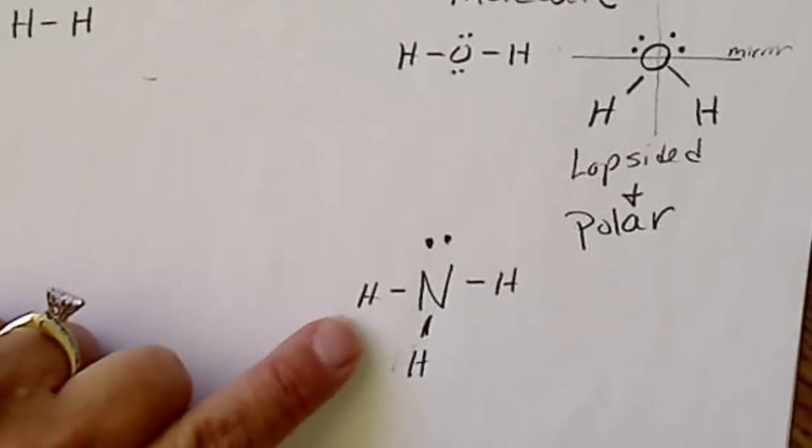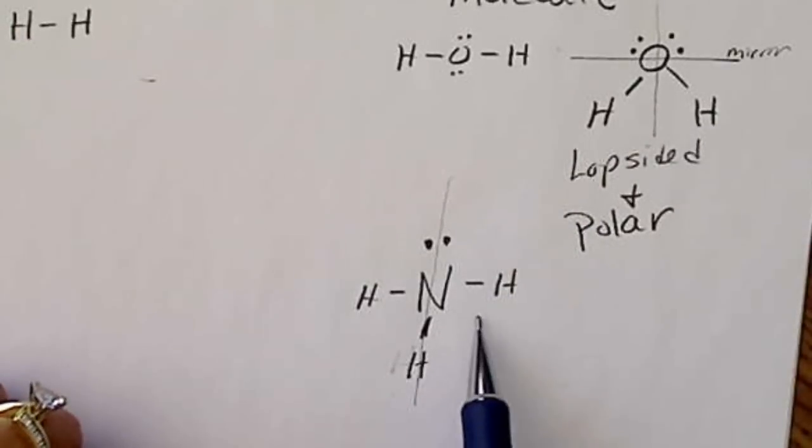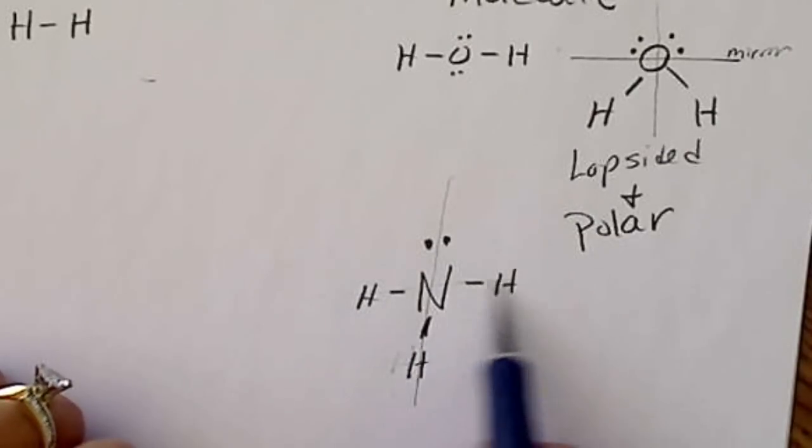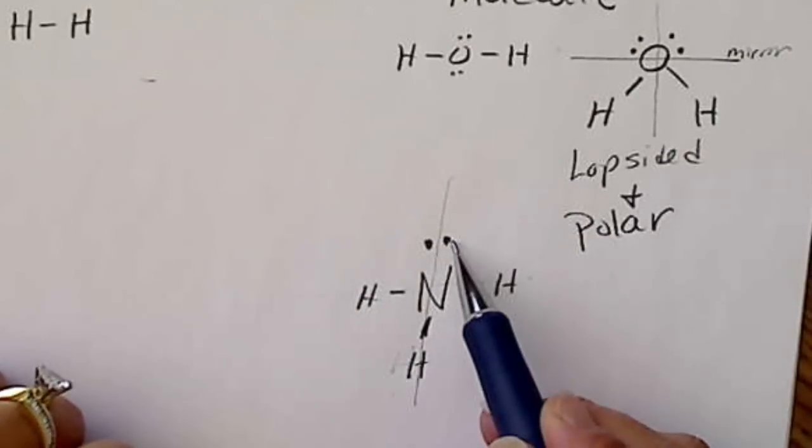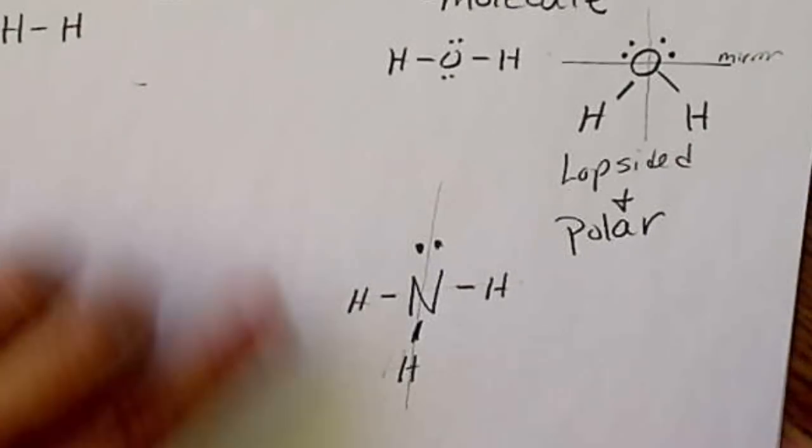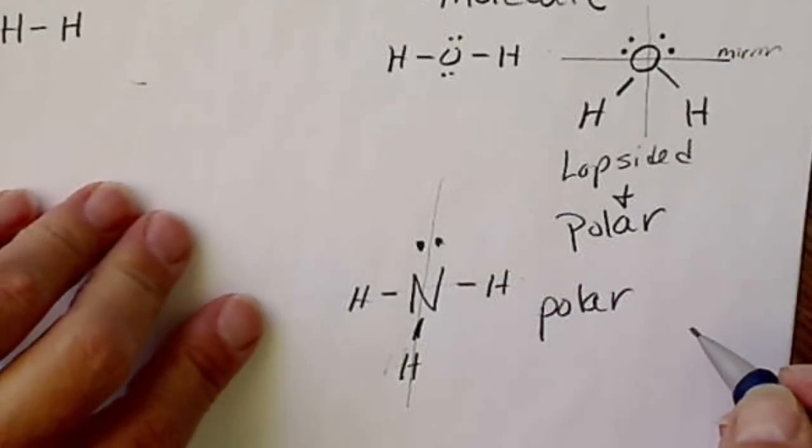It also looks kind of symmetrical. If we put a mirror down this way, it looks the same on both sides. But if we put a mirror across like this, it's got this lone pair sitting at the top of the pyramid.